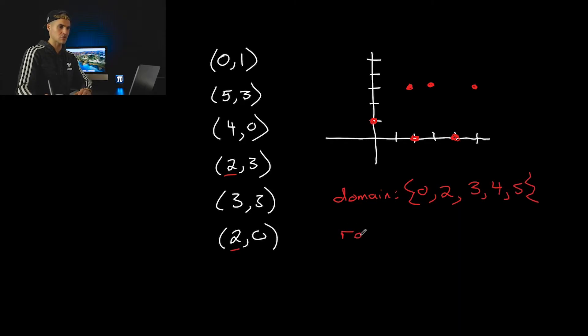And then we got the range here. So the range, it's going to be zero. Again, zero happens twice. We write it once. Next is going to be three. Three is actually happening three times with these three coordinates, but again, we're just going to write it once. Oh, sorry. I actually missed the one. The one comes before the three, and then comes the three, like that. So that would be the range right there.